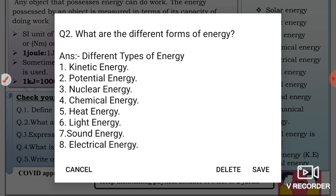Question 2: What are the different forms of energy? Different forms of energy: kinetic energy, potential energy, nuclear energy, chemical energy, heat energy, light energy, sound energy, electrical energy.